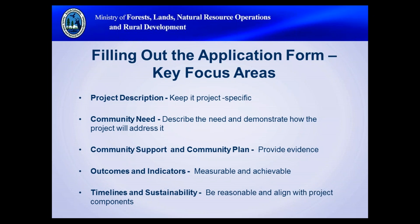For outcomes and indicators, we are looking for the specific things the project will accomplish and how the project proponent will measure that they've been completed. Outcomes should be attributable to the specific actions of the project, and indicators should be as measurable as possible. For example, an outcome could be 'increased training opportunities for small business owners' and the indicator could be the number of training sessions held and number of participants. Avoid broad outcomes like 'the community will double in population size.'